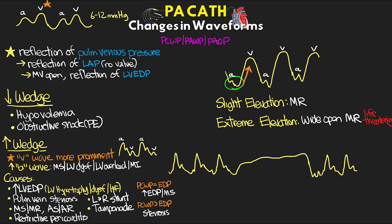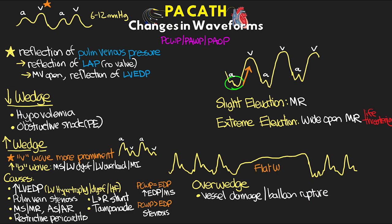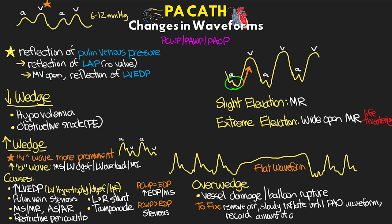The last thing to discuss with wedge pressure is an over-wedged balloon. This is when you inflate the balloon to get your wedge pressure and see a flat waveform. This tells us the PA catheter is in a smaller vessel that can't accommodate the full volume of air in the balloon, which can lead to vessel damage or balloon rupture. If you see this flat waveform, immediately remove the air from the balloon. Then slowly re-inflate until you see a good pulmonary artery occlusive pressure waveform. Record how much air it took, and pass that information along so future wedge measurements use the correct volume.